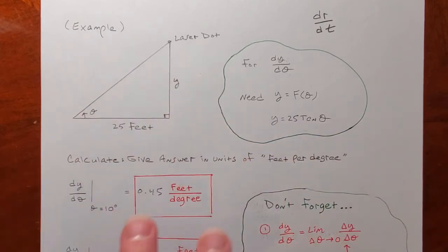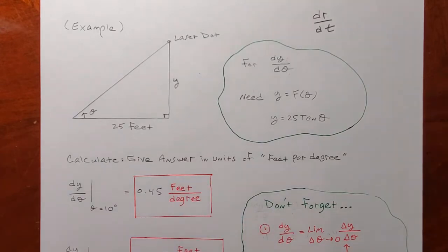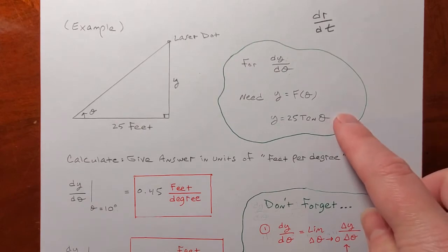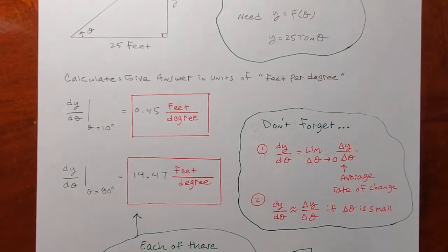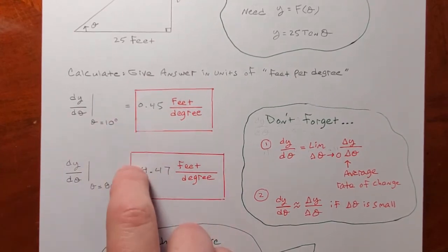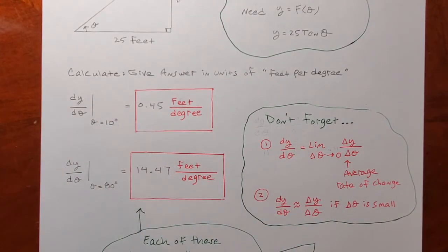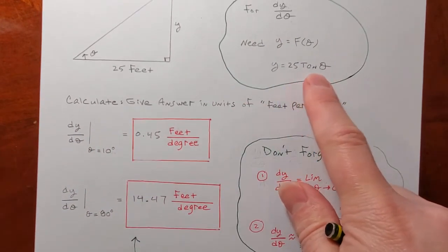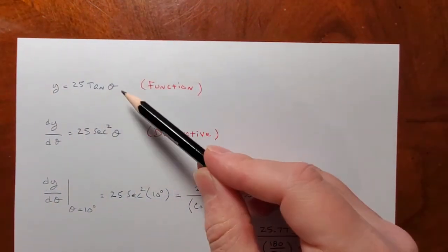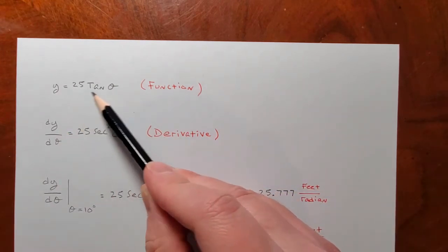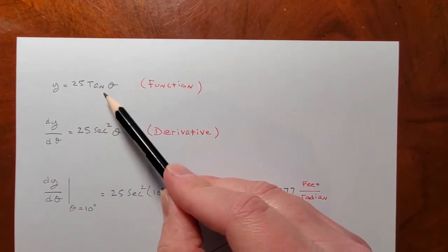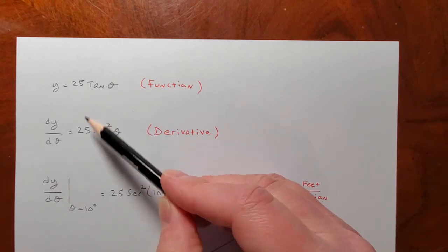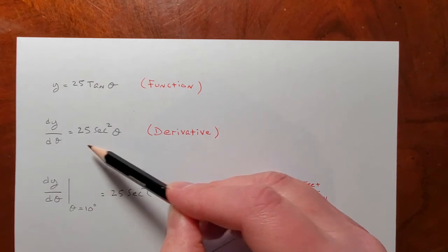So dy over dθ is just the derivative of that with whatever rules are applicable. Before we got into applications and concepts, we just learned the rules — so here's where those rules come into effect. The derivative dy over dθ is the derivative of 25 tangent theta. What do our rules say the derivative of tangent theta is? It's secant squared. What do we do with the 25? A constant is brought down, so it's 25 secant squared theta.